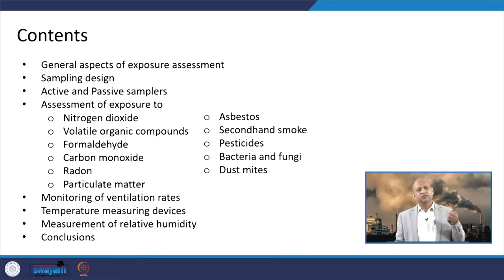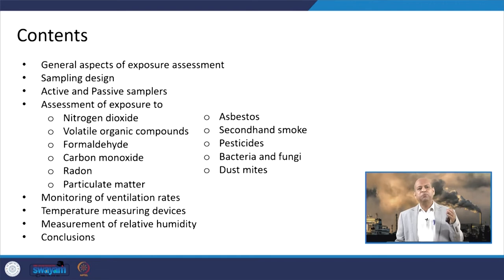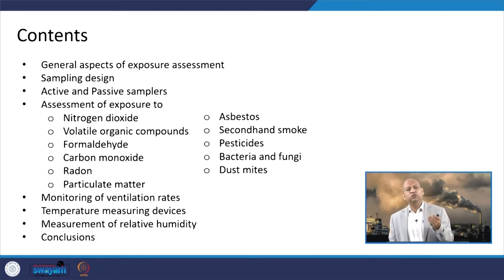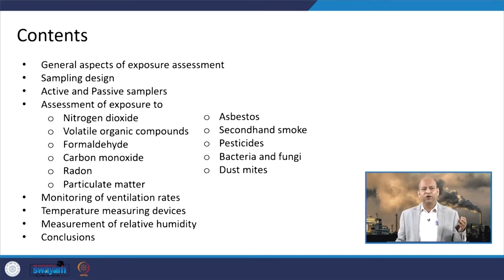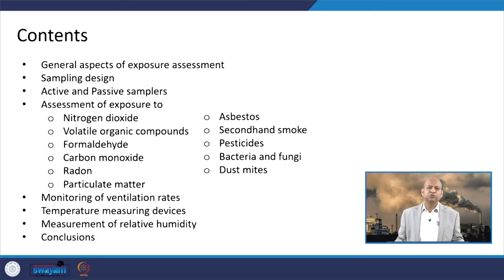The contents of today's lecture include: general aspects of exposure assessment, how sampling is done in the indoor environment, the principles of sampling, and how to design the sampling. Then active and passive samplers and the difference between them. Then assessment of exposure to different indoor air pollutants like nitrogen dioxide, VOCs (volatile organic compounds), formaldehyde, carbon monoxide, radon, particulate matter, asbestos, secondhand smoke, pesticides, bacteria and fungi, and dust mites — all these important indoor air pollutants with respect to human health exposure.